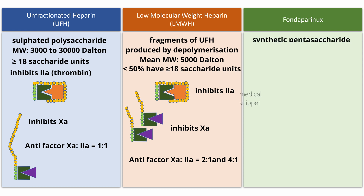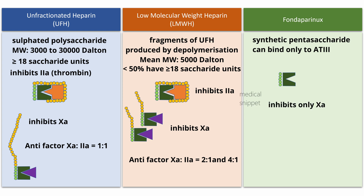Fondaparinux is a synthetic pentasaccharide. It has only the pentasaccharide sequence to bind antithrombin III, and thus it inhibits only factor Xa. It does not inhibit thrombin, as it has no extra saccharide units to form a ternary complex with thrombin.